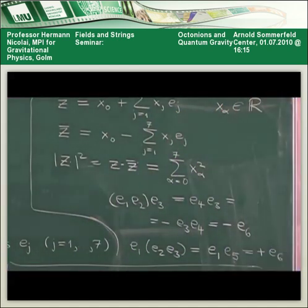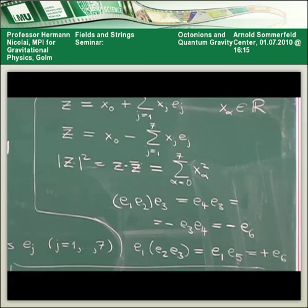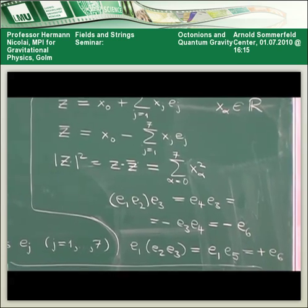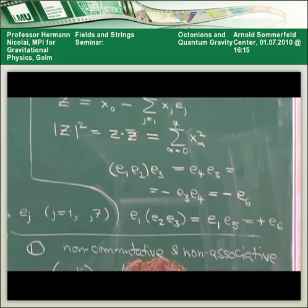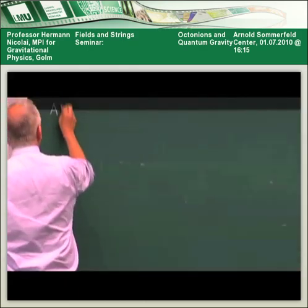Octonions are non-commutative and non-associative, which means they do not in general satisfy A·(BC) = (AB)·C. In physics we're used to non-commutativity, but I can assure you that non-associativity is much worse. There's still a little property left for the octonions called alternativity.